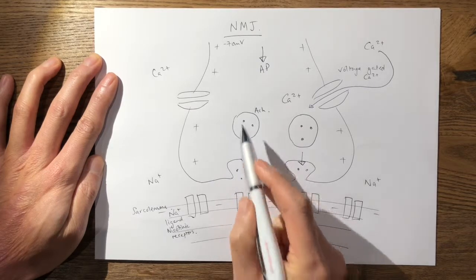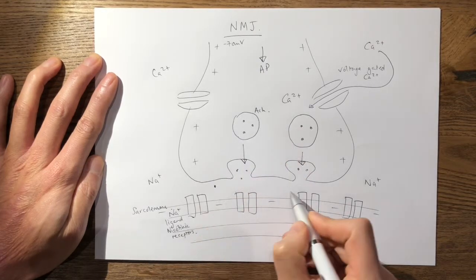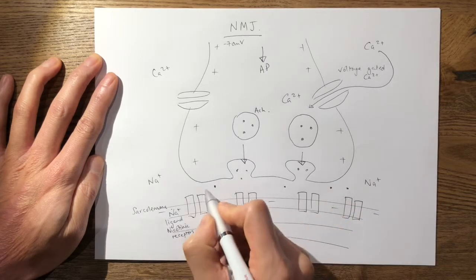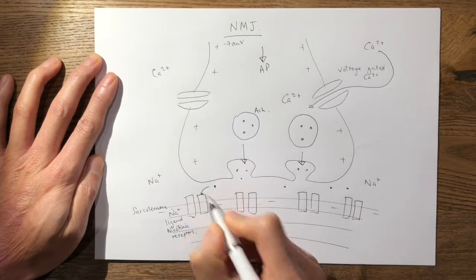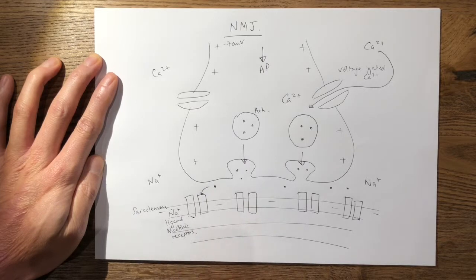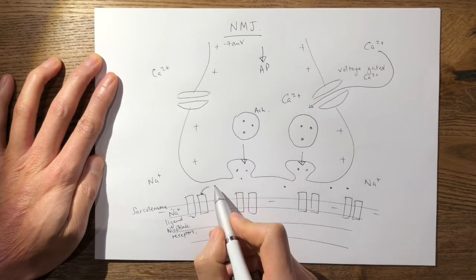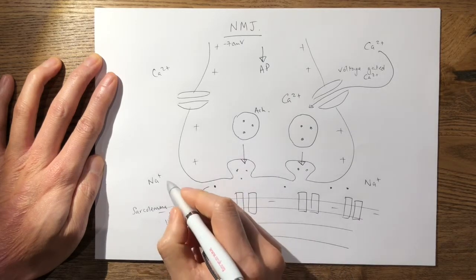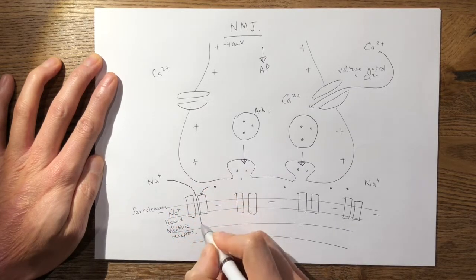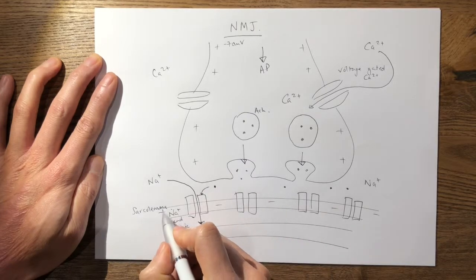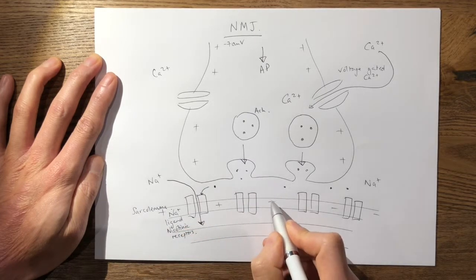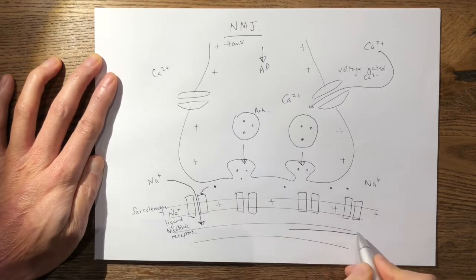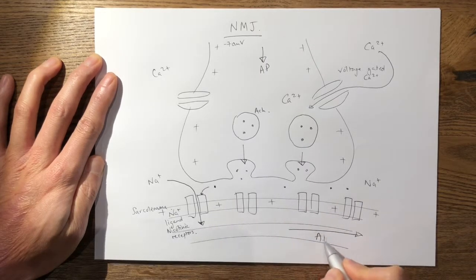Now these vesicles containing the acetylcholine, which is your neurotransmitter for skeletal contraction, the acetylcholine binds onto these sodium ligand-operated nicotinic receptors and this causes these to open. Therefore you get an influx of sodium and therefore making the resting potential on the sarcolemma more positive, and this causes propagation of the action potential on the sarcolemma.